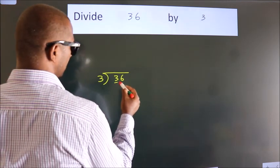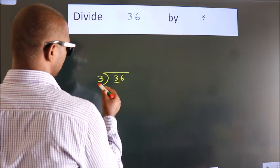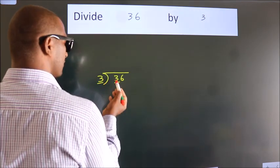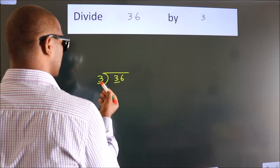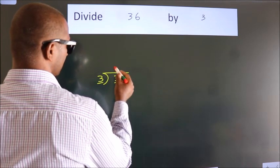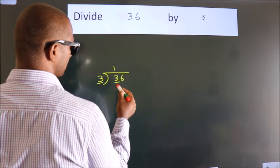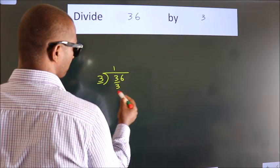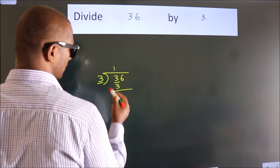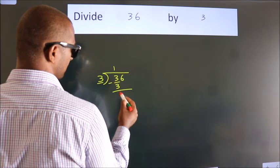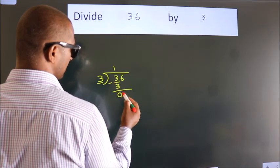Here we have 3. Here 3. When do we get 3? In the 3 table. 3 once is 3. Now we should subtract. We get 0.